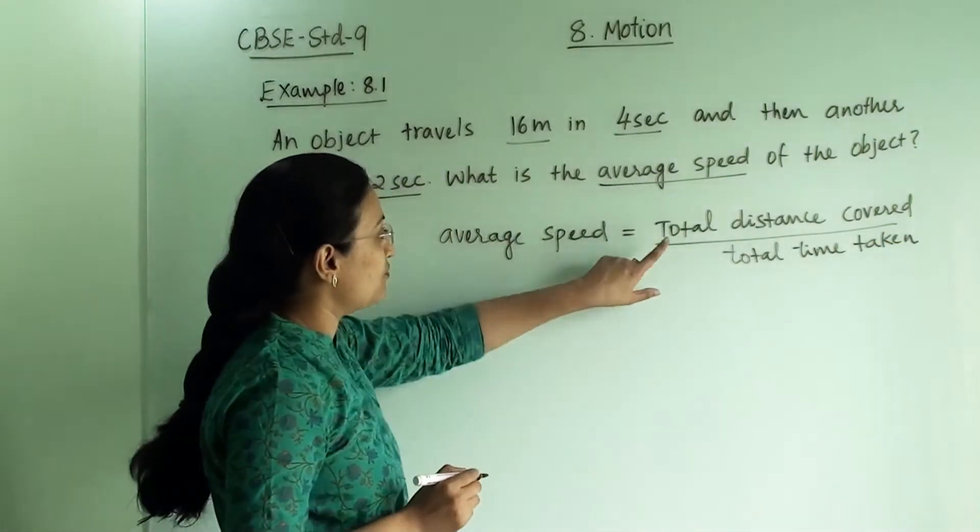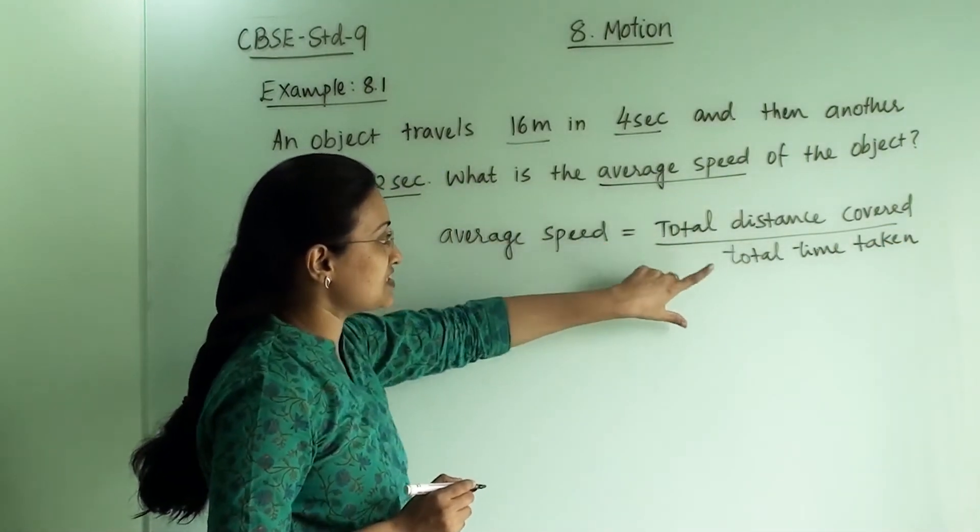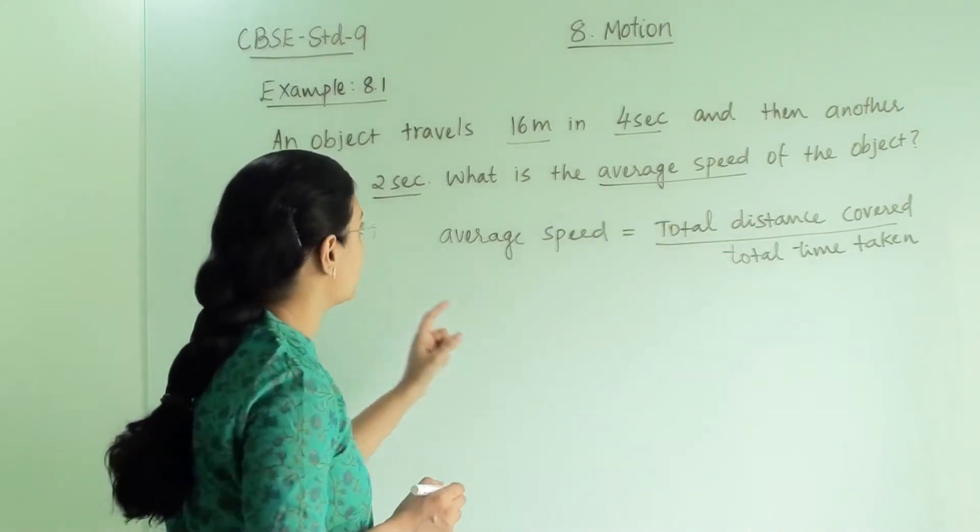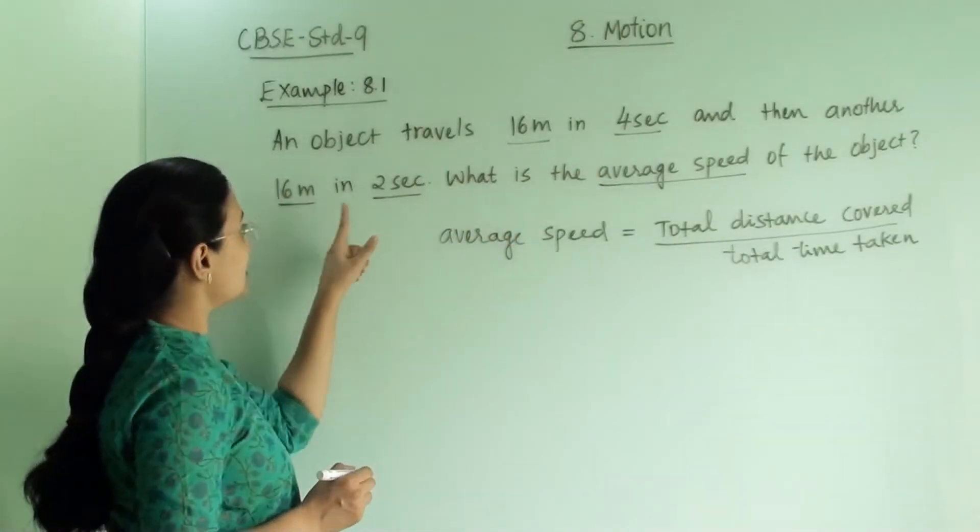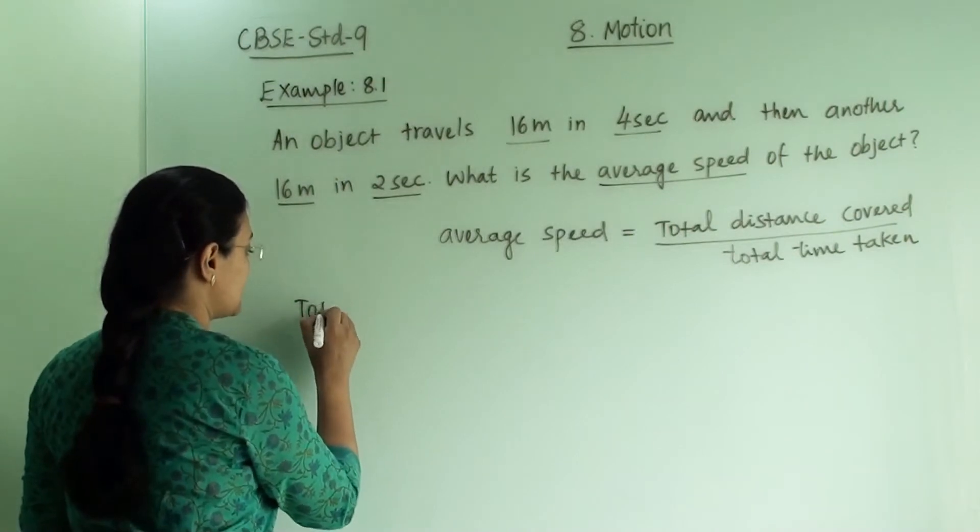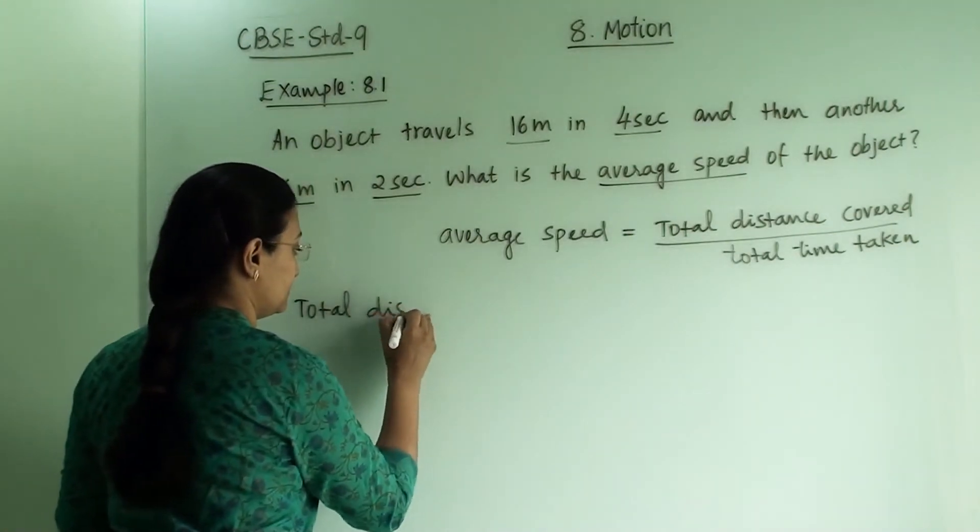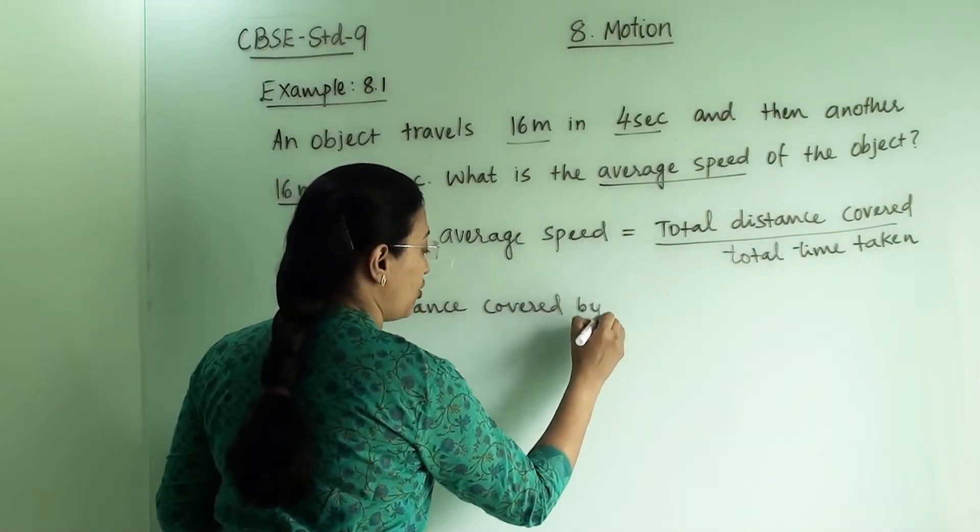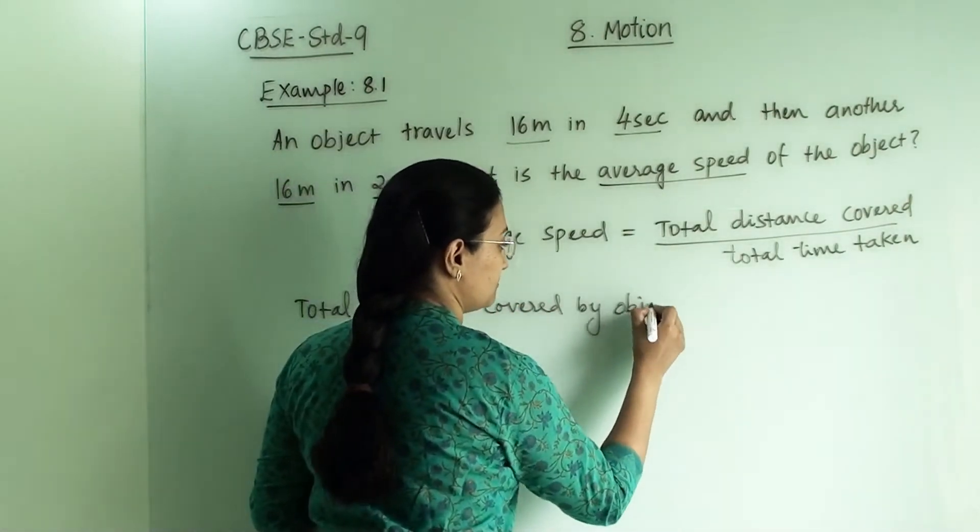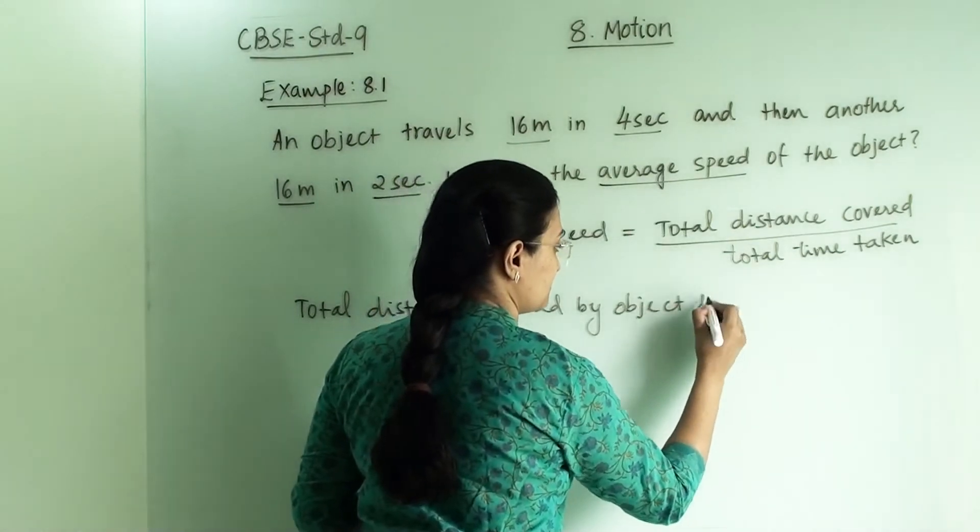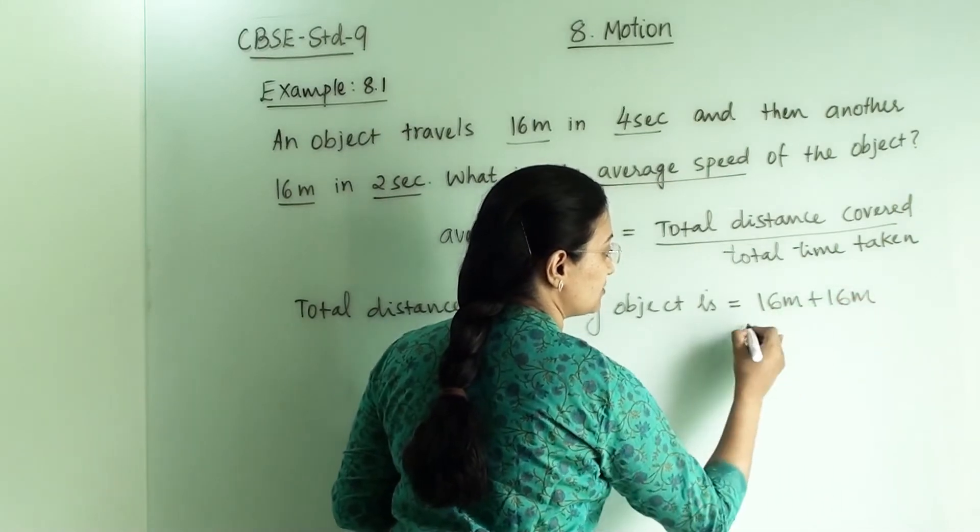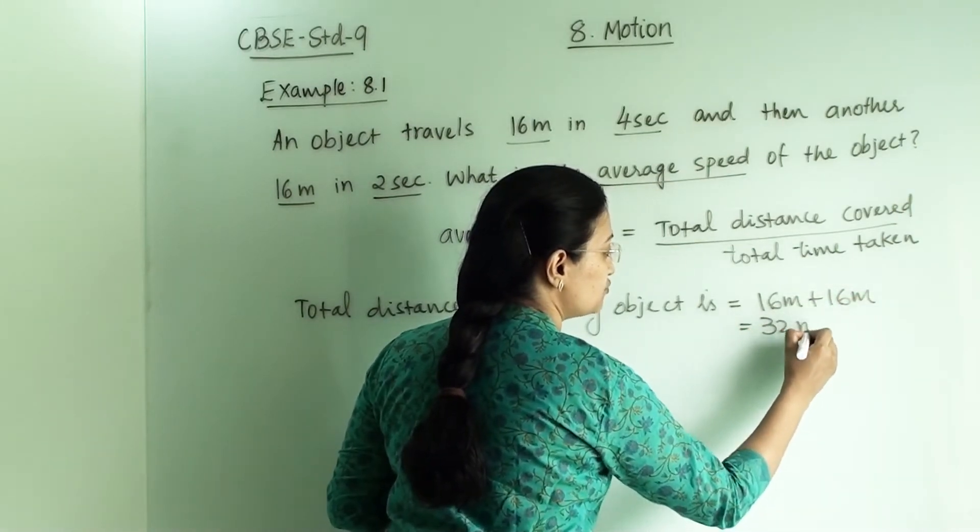So in this we have to find out the total distance first and then total time. After that we will put those things in this equation. So here 16 meter in 4 seconds and 16 meter in 2 seconds. So total distance covered by object is in first journey 16 meter and in second journey 16 meter. So it equals to 32 meter in total.